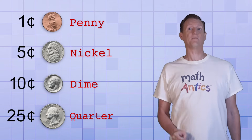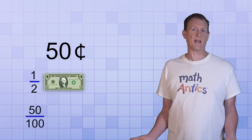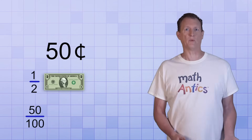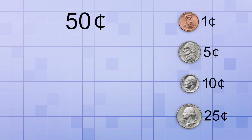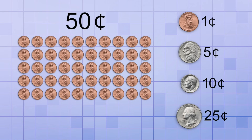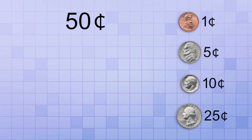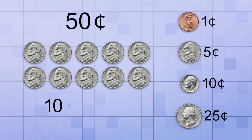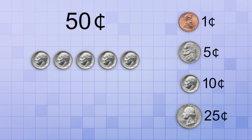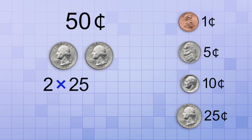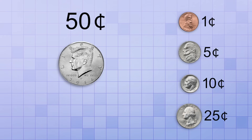Because these are the only four coins widely available today, you need to use various combinations of them to make other fractional amounts of a dollar. If you wanted to represent fifty cents — which is half a dollar, since fifty is half of one hundred — you could do that in several different ways. You could make fifty cents using fifty pennies, but that wouldn't be very efficient. Instead, you could use ten nickels, because ten times five equals fifty. Using dimes would be even better — you only need five of them, since five times ten is also fifty. But the most efficient way would be just two quarters, since two times twenty-five equals fifty.